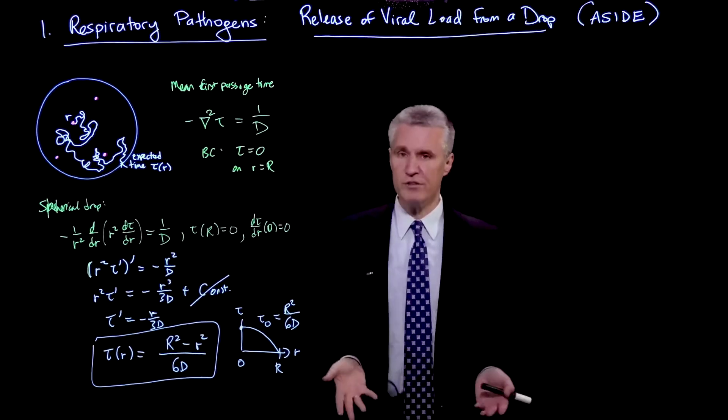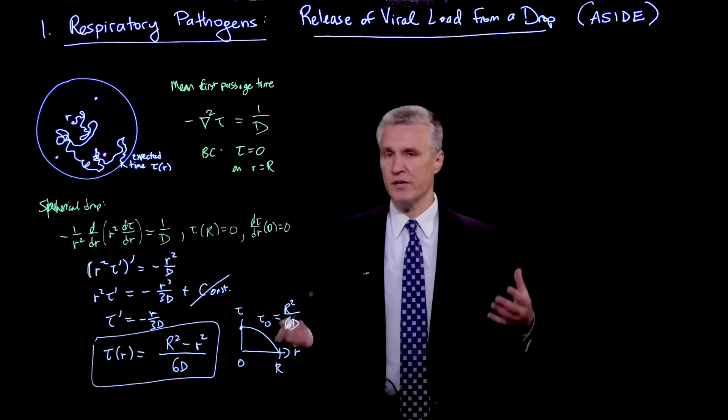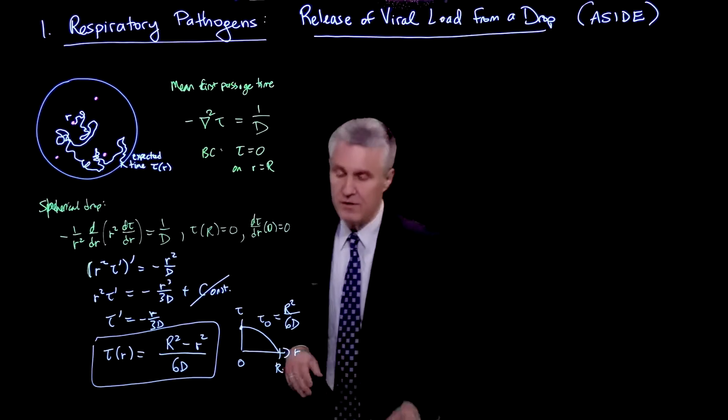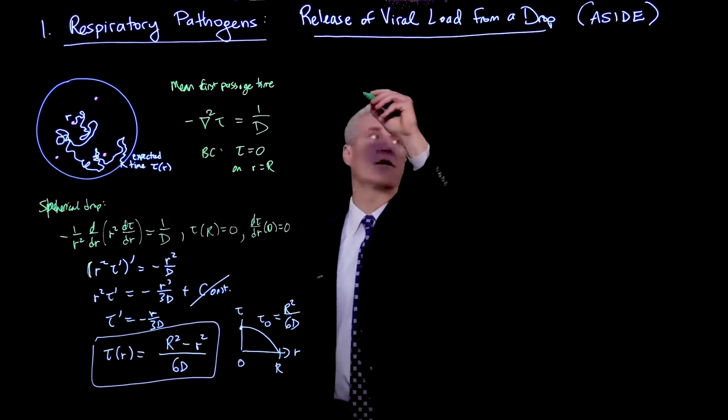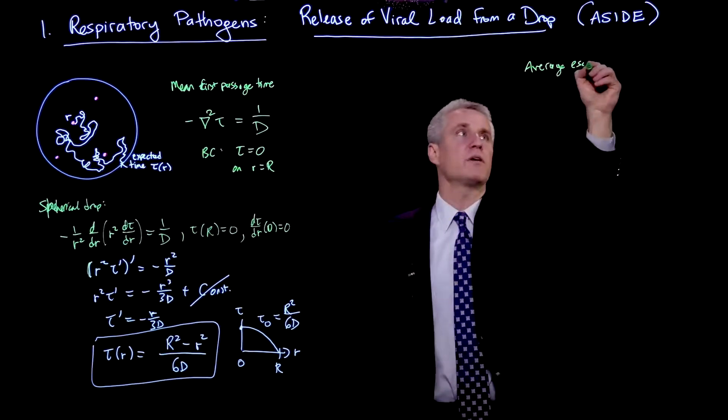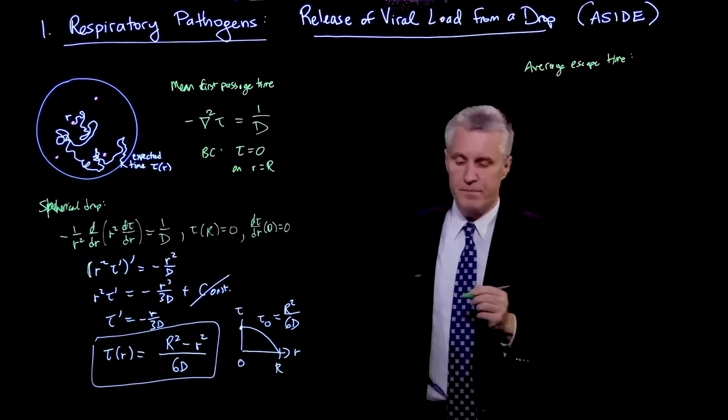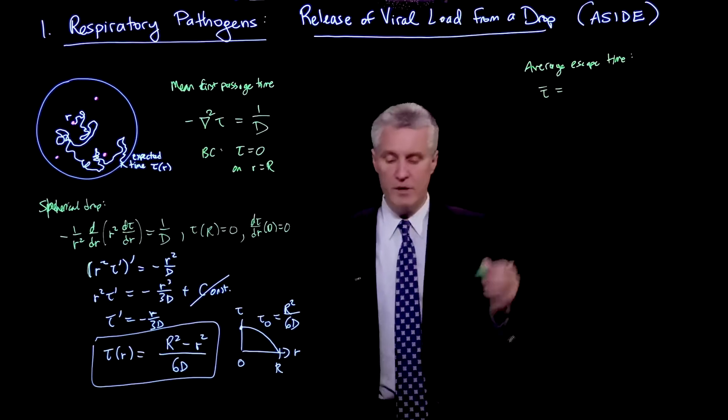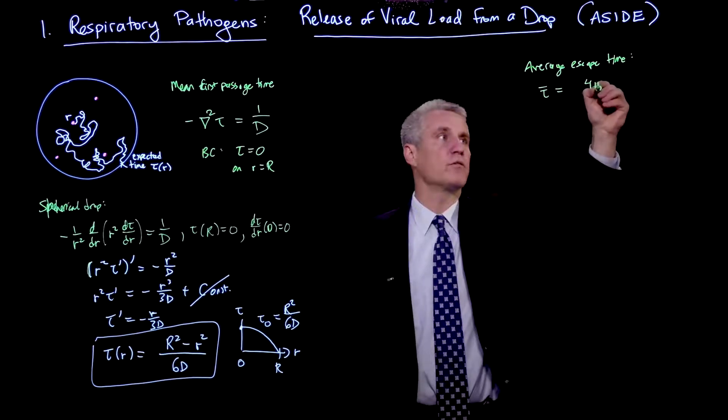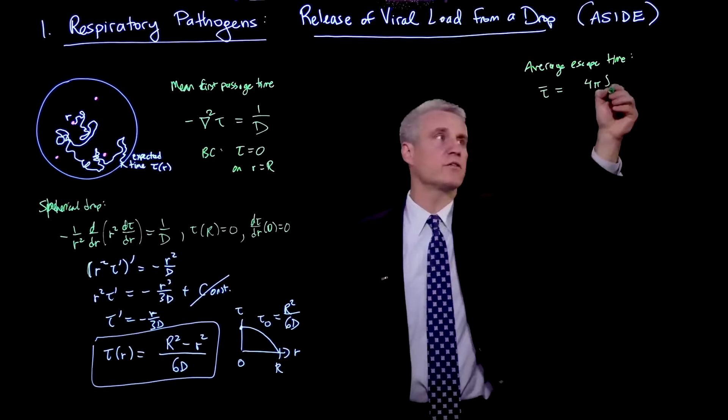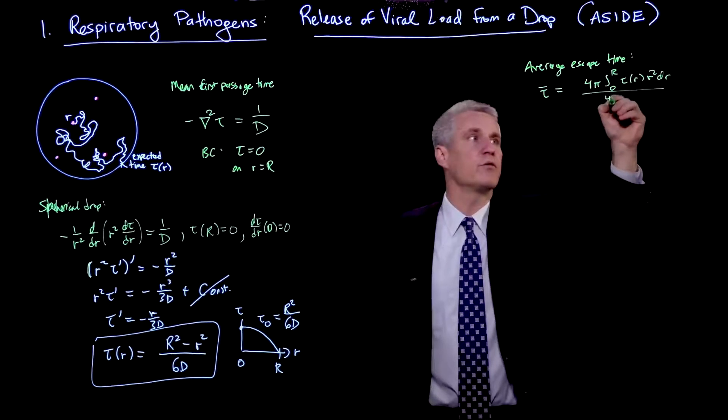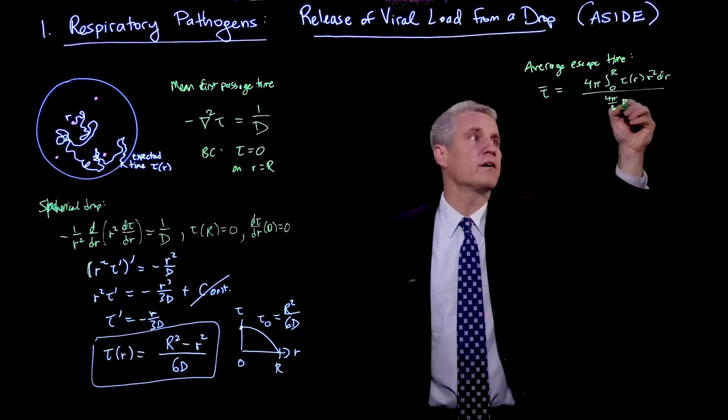So now we can ask the question, what is the average escape time over all the initial positions of the virus, or virion, assuming that the virions are uniformly distributed at random in the initial condition? So if we do that, then we're solving for the average escape time, or first passage time for the virus, that the virions will be tau bar. Well, what I'll do is I'll integrate over all the positions and then divide by the volume, because it's a uniform distribution. So I'll write the integral over the volume as 4 pi, the solid angle, times integral from 0 to capital R of tau of R, r squared dr, and I'll divide by the total volume, 4 thirds pi capital R cubed.